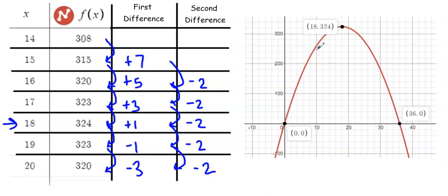Notice that in this example, my second difference is negative, which is why my parabola is opening downward. Let's look at some of the key features of this function and what they represent in this problem.